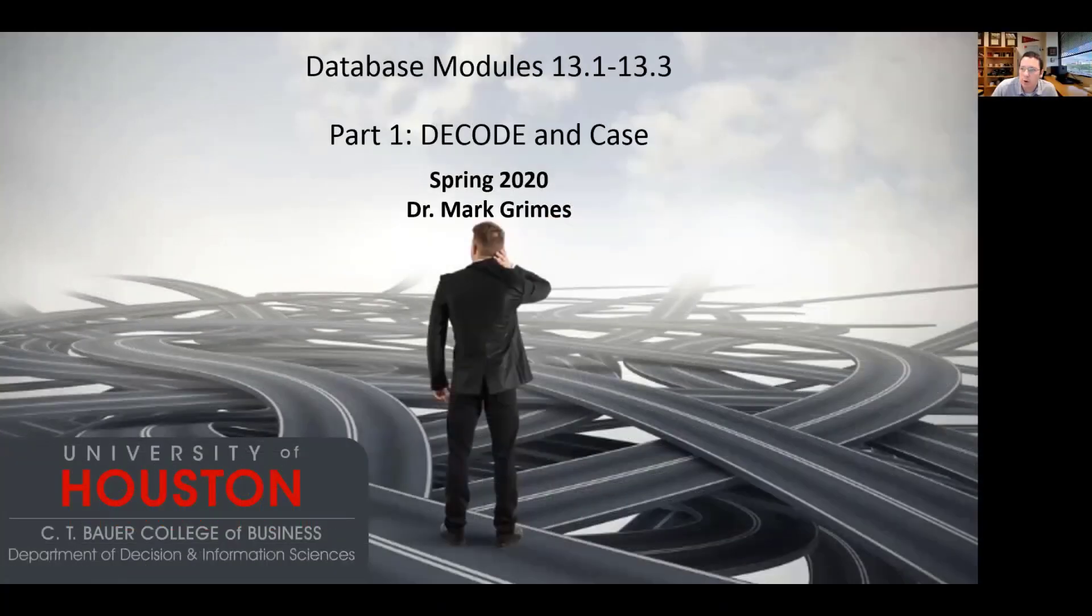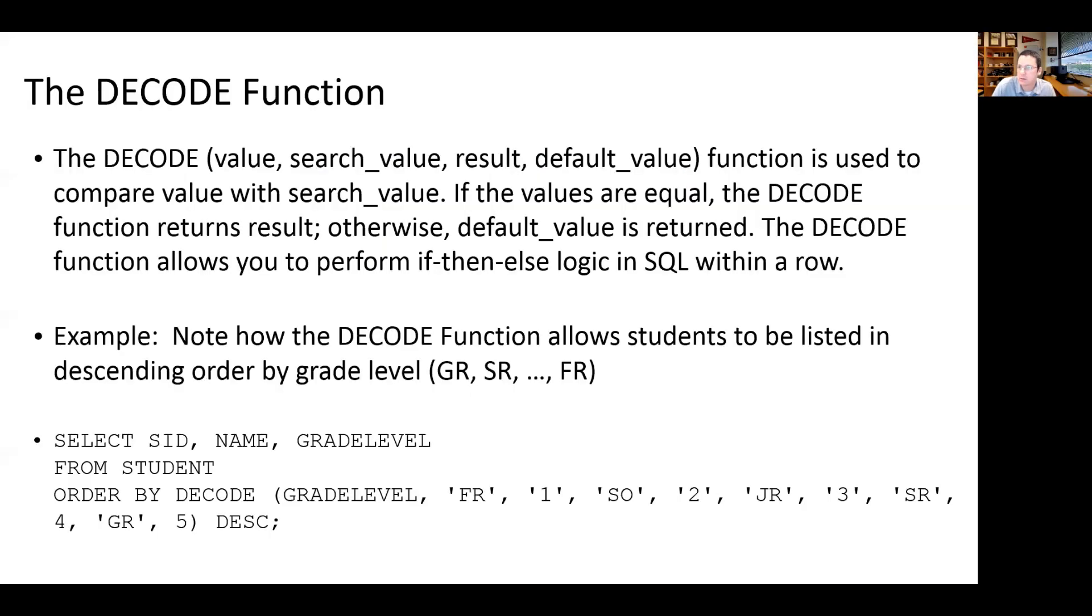Alright everyone, in part 1 of module 13.1 through 13.3, we are going to be looking at two functions that allow us to change some value based on the value that is provided to it, which is the DECODE and the CASE functions. DECODE allows us to do is specify some sets of values for an attribute, and if we see this value, we're going to replace that value with some other value, just like a secret decoder ring.